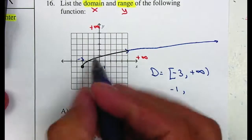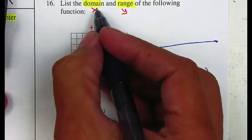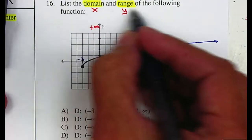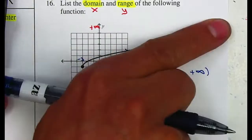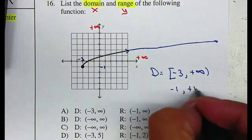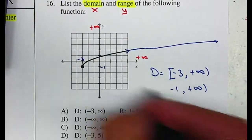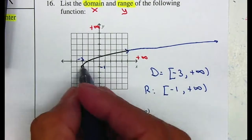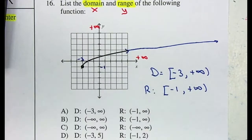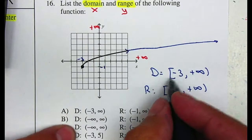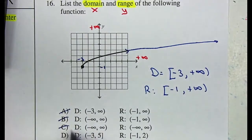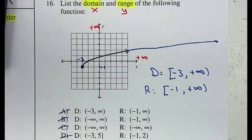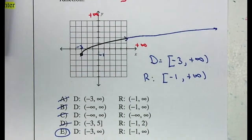Even if you go 10 units up, the graph will still be rising — way, way over there, but still rising. So positive infinity. And this will also be a bracket since there is a closed dot here. So your domain has to have a bracket at negative 3 — that one is closed. And your range — so therefore your answer is letter E. Letter E matches our answer.